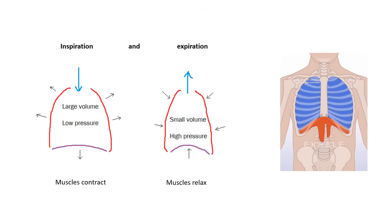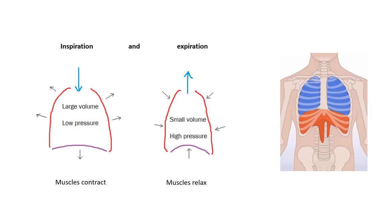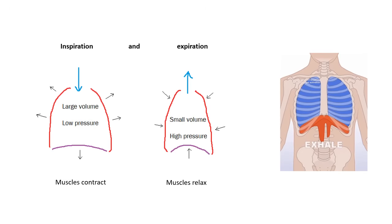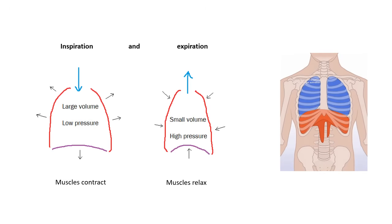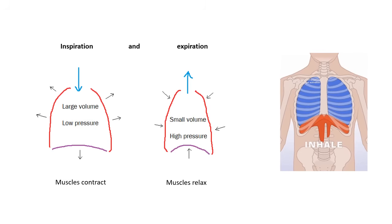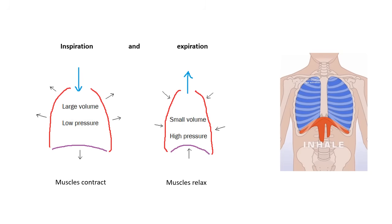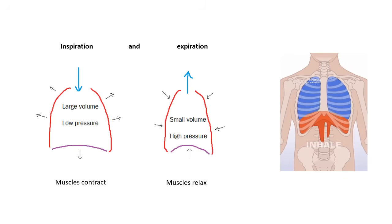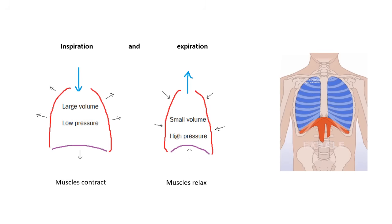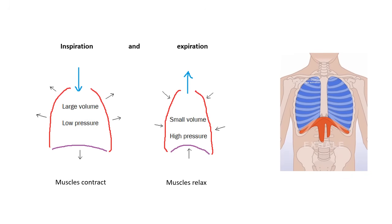Breathing in — the diagram on the left. The muscles contract. The muscles of the diaphragm contract, and this causes it to move downwards. The intercostal muscles contract, and this causes them to move up and outwards. As a result of this, the volume inside the lungs gets bigger. If the volume gets bigger, then the pressure gets lower, because you've got the same amount of air in a bigger volume. So the pressure gets lower — this creates a partial vacuum, which sucks air into the lungs. So: muscles contract, volume gets bigger, pressure gets lower, air gets sucked in.